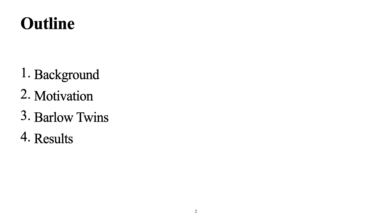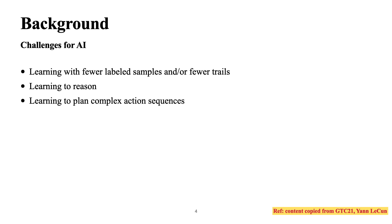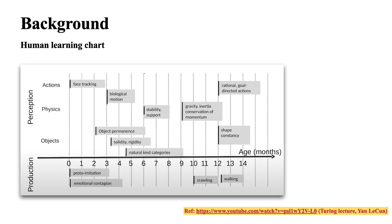Let's start with the background. These days we have three main challenges for AI. First, learning with fewer labels and fewer trials — for example, humans don't need many examples to distinguish between a car and a bicycle. Second, learning to reason — for example, the sky should always be up, not down. Third, learning to plan complex action sequences — for example, predicting the next frame in a video.